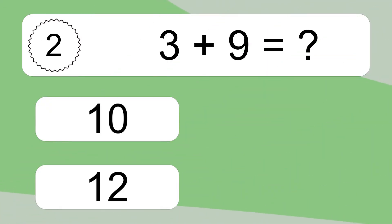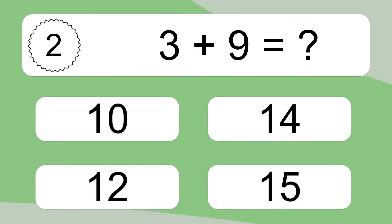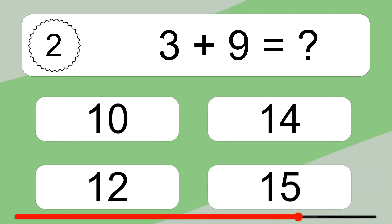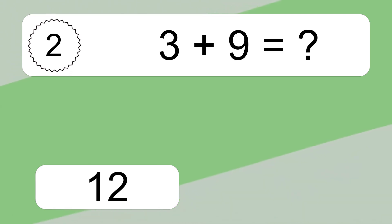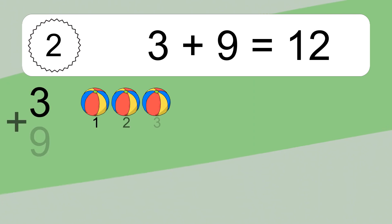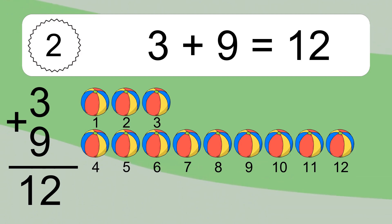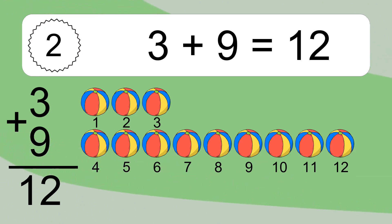3 plus 9 equals what? 3 plus 9 equals 12. Let's count it: 1, 2, 3, 4, 5, 6, 7, 8, 9, 10, 11, 12.